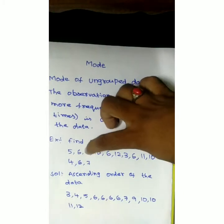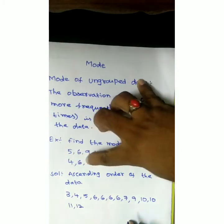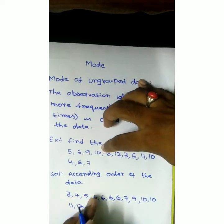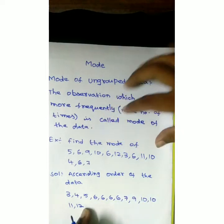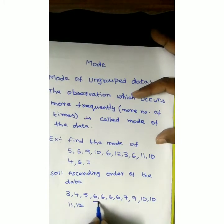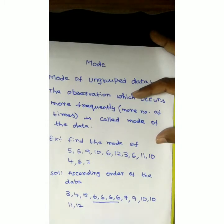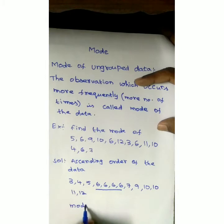Then 11 and 12 each appear once. So the observations are noted. We can see that 6 is repeated more number of times. Though 10 is also repeated, 6 is repeated more number of times. So mode is equal to 6.